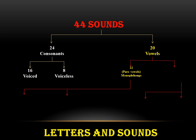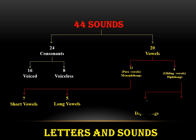Pure vowels or monophthongs are further divided into two categories: 7 of them are short vowels while 5 of them are long vowels. Whereas gliding vowels are of two types: 3 of them are closing diphthongs and 5 of them are centering diphthongs.